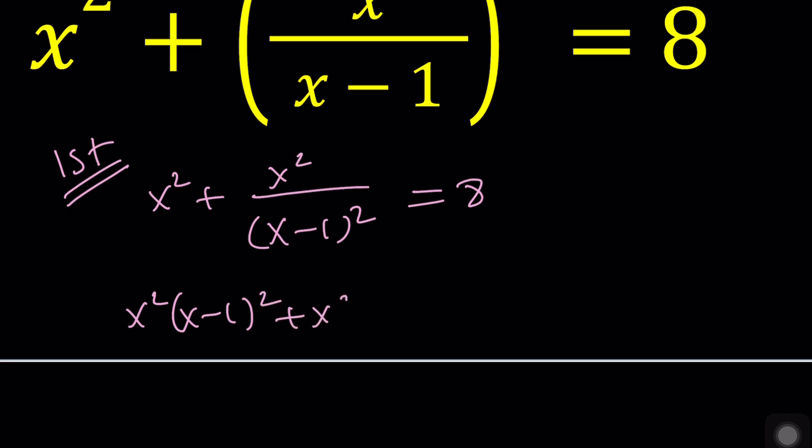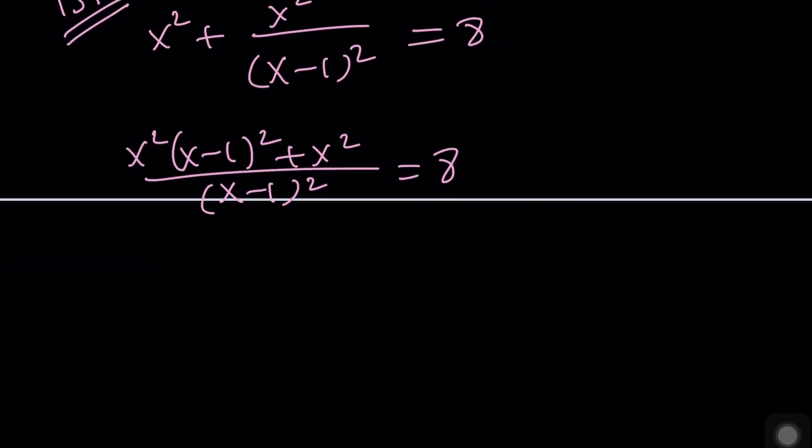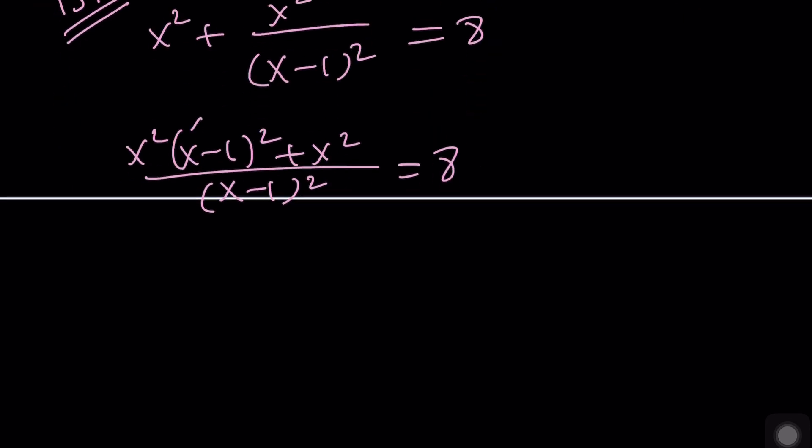Now, if you go ahead and expand, you're going to get x squared minus 2x plus 1, and then distribute to x squared. We have another x squared.